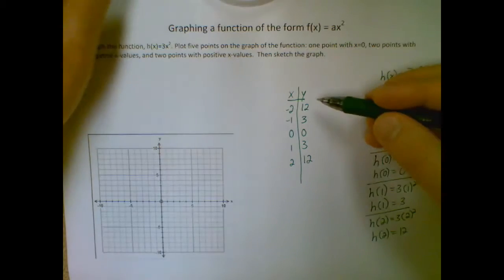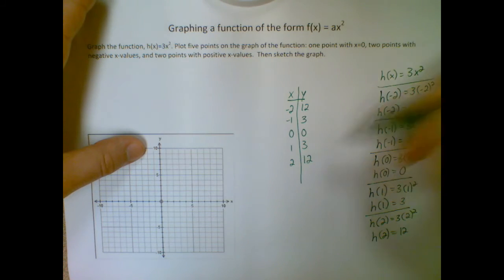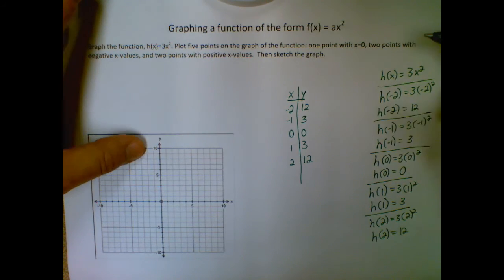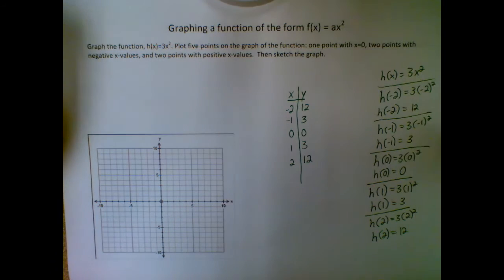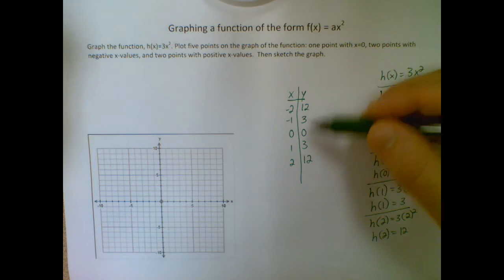Okay and you'll probably notice that we do have our symmetric structure here so it's twelve, three, zero, three, twelve. That is, remember, not a given, but if they're the same distance from our middle point, which in this case is zero zero, that will happen.